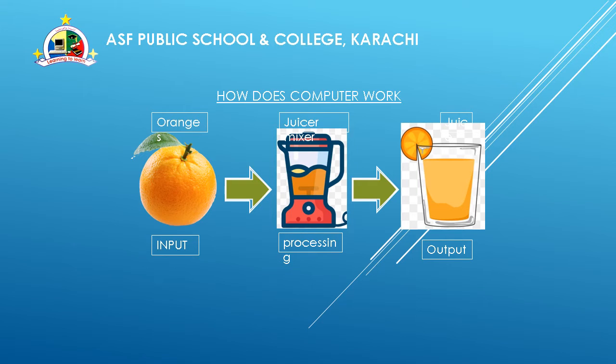What is the next step? The second step is carried out by the juicer. It squeezes the orange to separate the juice. Squeezing is the process that the juicer carries out on the input. The juicer makes the juice using its electricity, and this process is called processing.